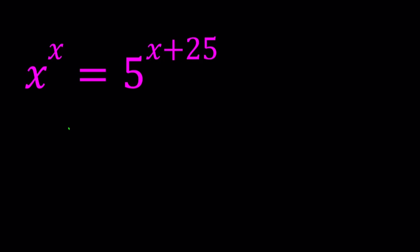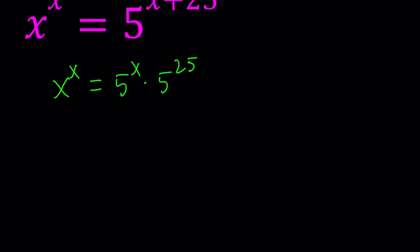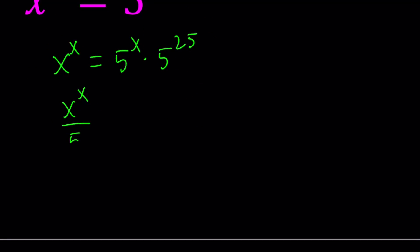First of all, separate the 5 to the x and 5 to the power 25. By the way, 5 to the power 25 is a very large number. Don't evaluate it. My goal is to bring all the x's together. So, let's divide both sides by 5 to the power x, and then that way we're isolating the gigantic number. This is good because these two expressions, the numerator and the denominator, they have the same exponent. I'm not saying they have the same base, they have the same exponent.